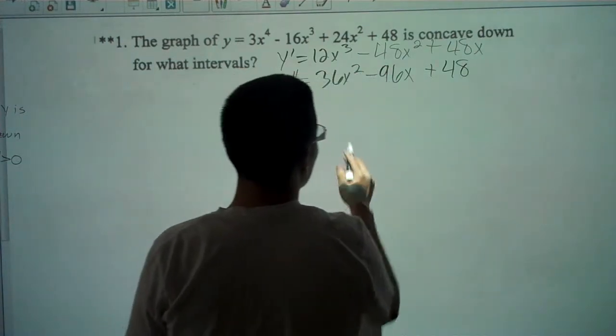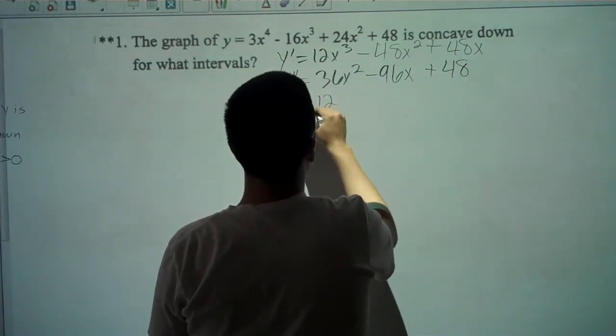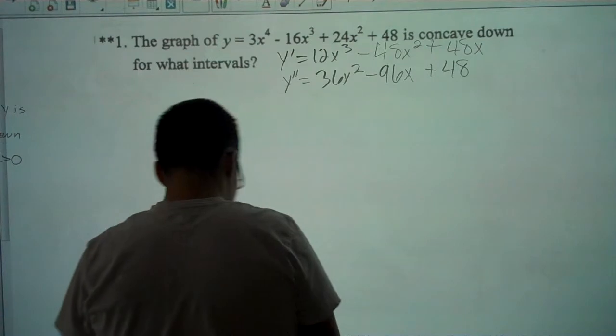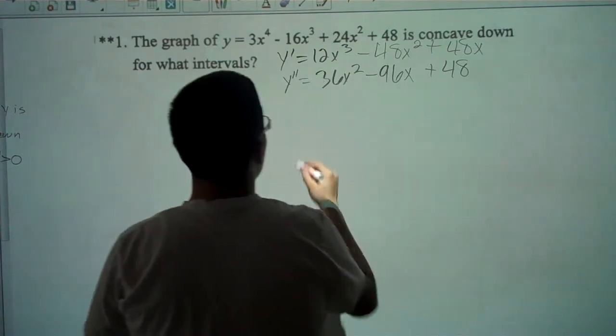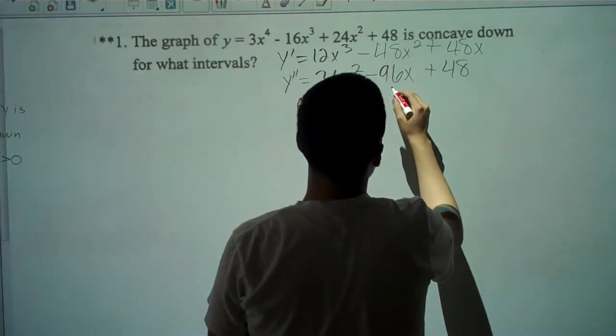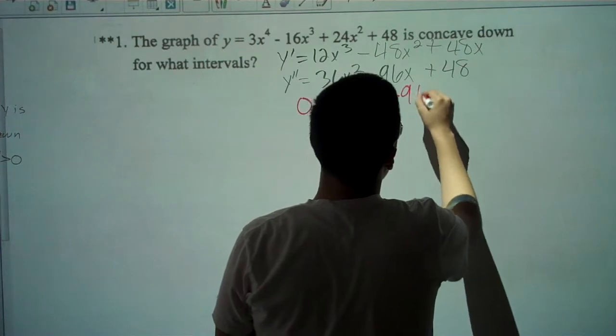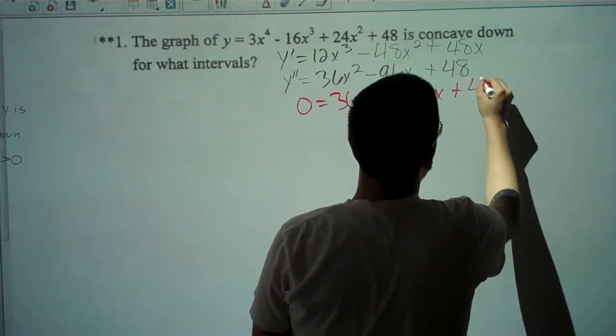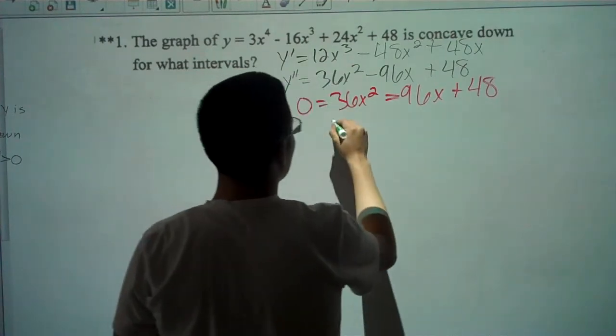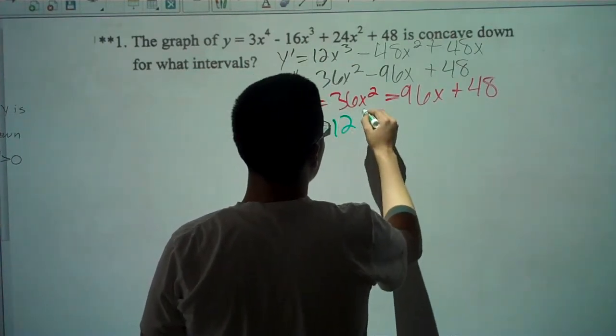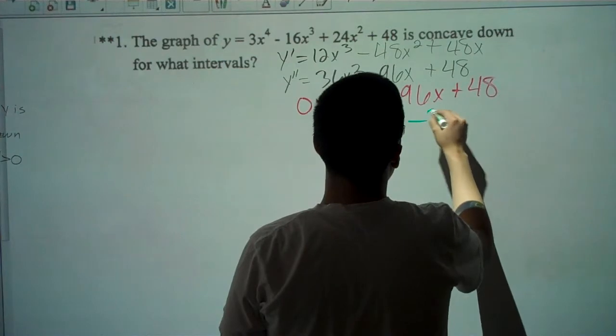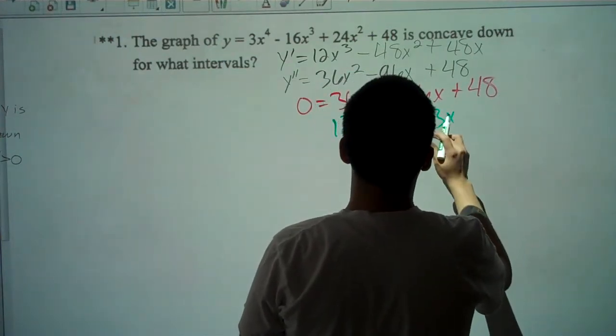Now we can take out 12 from this. First we have to set it equal to zero. You set the equation to zero and I see that you can factor out a 12 from here.